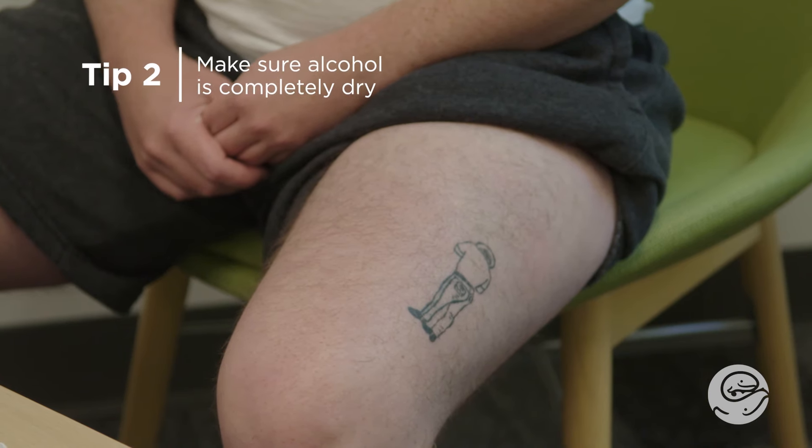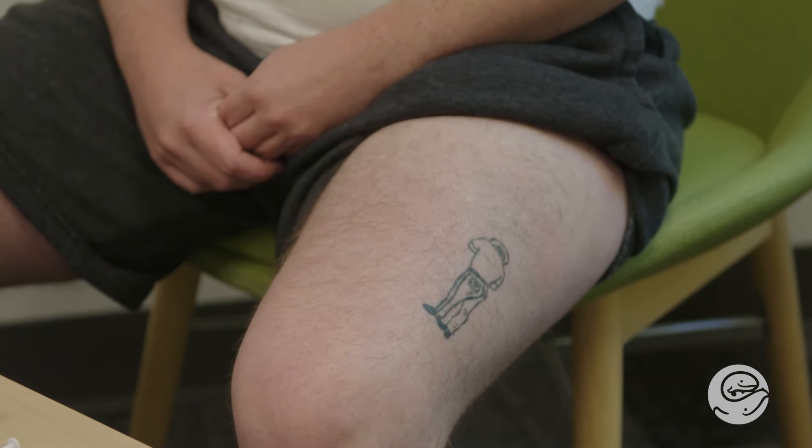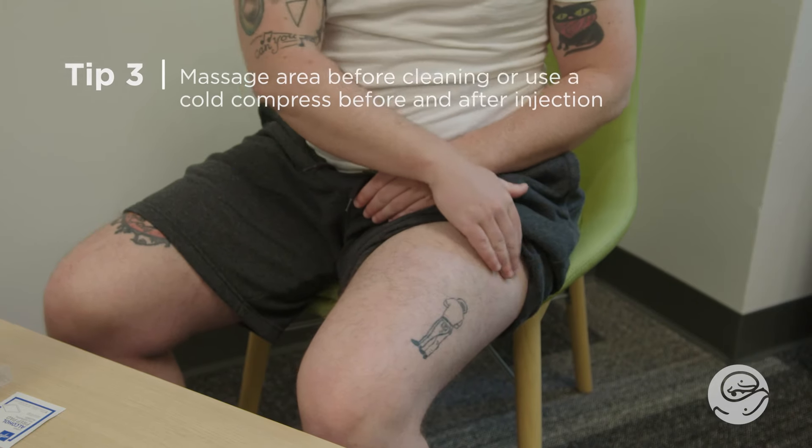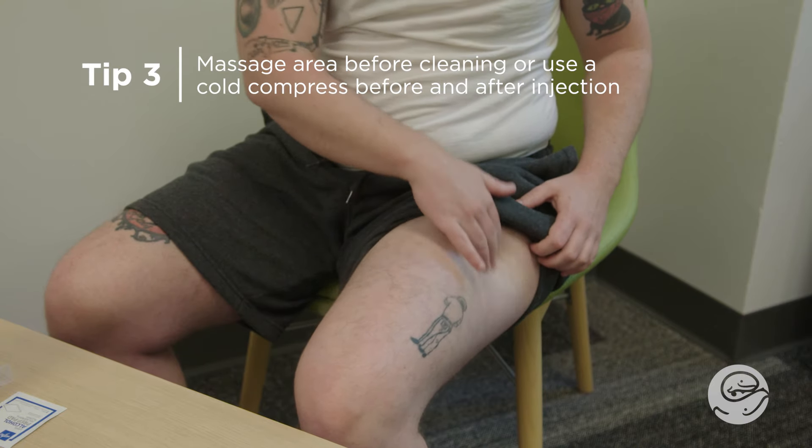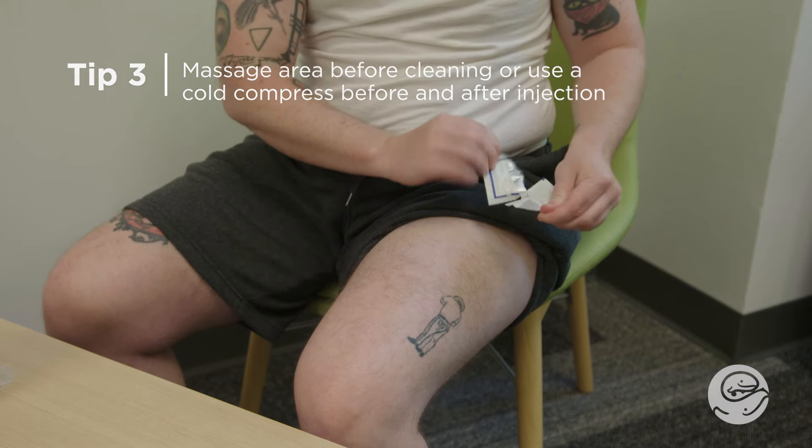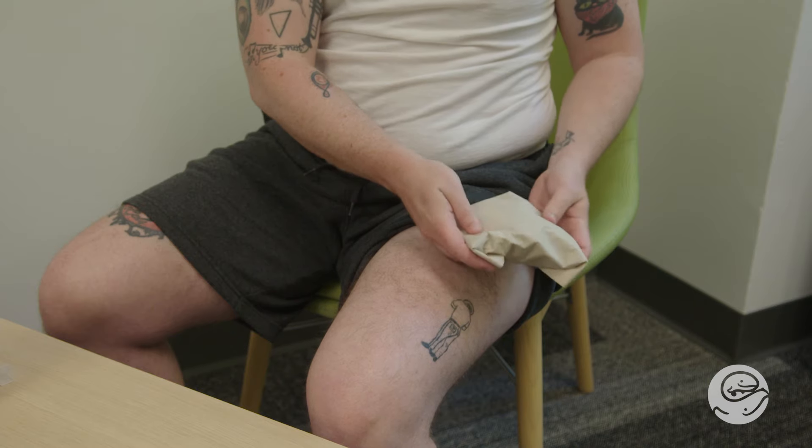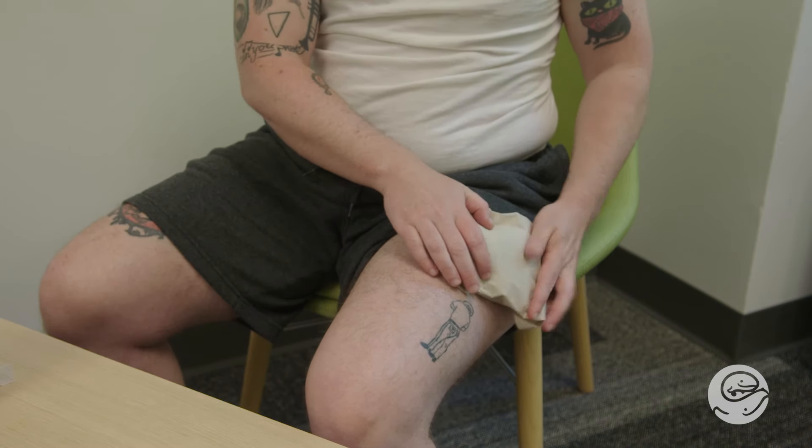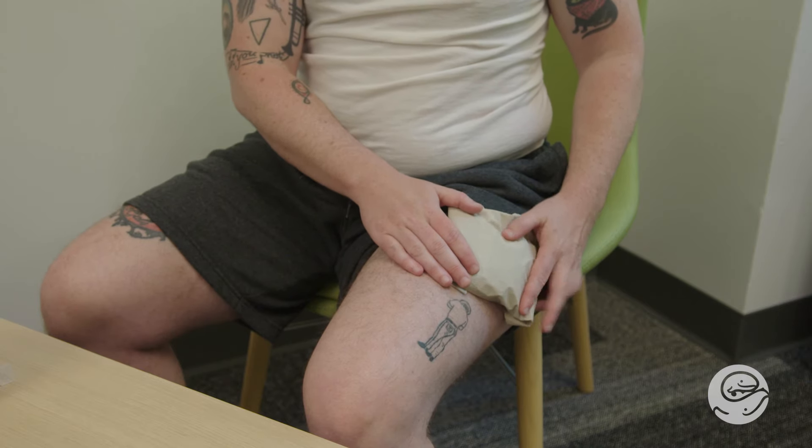Tip 2. Make sure the alcohol is completely dry before giving the injection. If it is still wet, the injection will sting when you give it. Tip 3. You can massage the area before cleaning it to decrease pain. Another option to decrease pain is to ice for 1-2 minutes before giving the injection and for 3-5 minutes after giving the injection. Never place cold packs directly on the skin. Wrap cold packs with a t-shirt or towel before placing on the skin. This protects the skin from getting an injury from the cold.